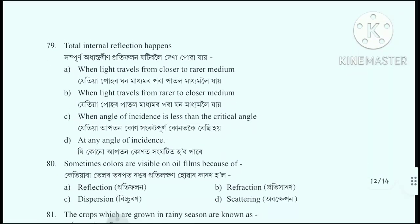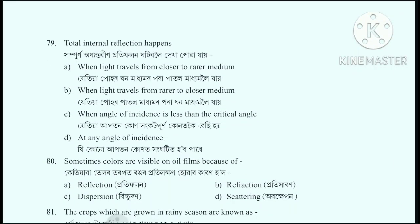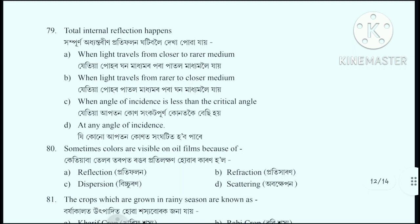Question number 79: Total internal reflection happens - total internal reflection can be observed. The correct answer is option A: When light travels from a denser medium to a rarer medium.